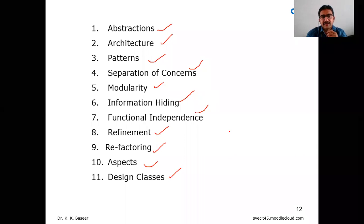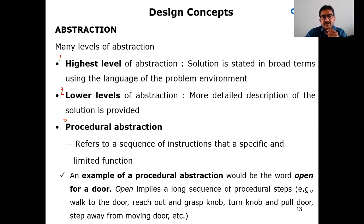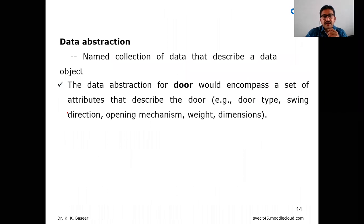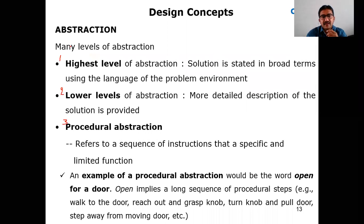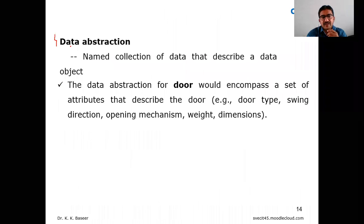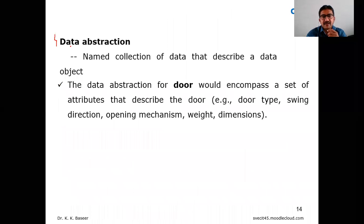Starting with the first topic: abstraction. Abstraction talks about many levels. There are four different types: highest level, lower level, procedural abstraction, and data abstraction. Make a note of these four types of abstractions.